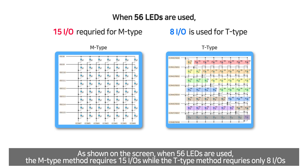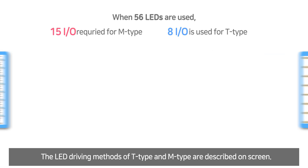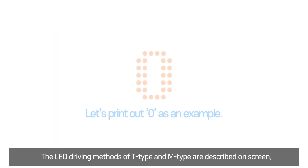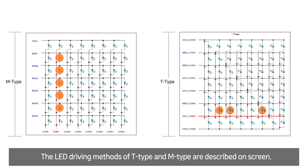As shown on the screen, when 56 LEDs are used, the M-type method required 15 IOs while the T-type method required only 8 IOs. The LED driving method of T-type and M-type are described on screen.